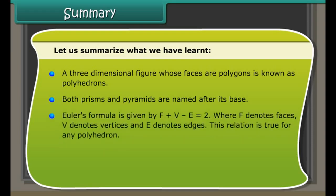Pyramid: a solid shape with triangular side faces meeting at a common vertex and having a polygonal base is called a pyramid. Some pyramids have square bases — for example, the Egyptian pyramid — and are called square pyramids. A triangular pyramid is also known as a tetrahedron. Pyramids are classified based on their base: triangular pyramid (tetrahedron), square pyramid, and hexagonal pyramid.